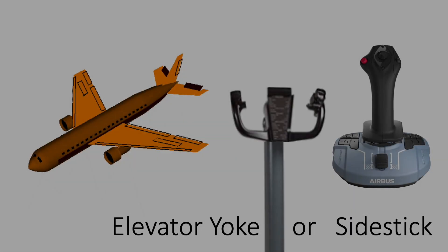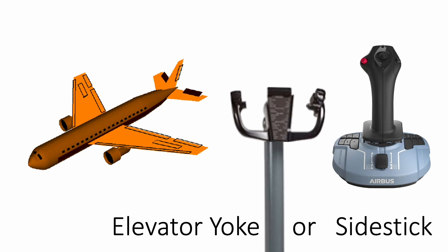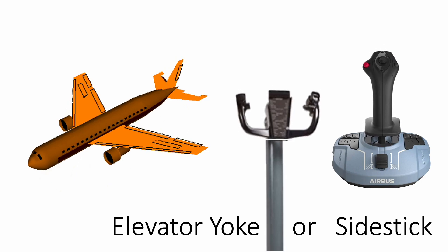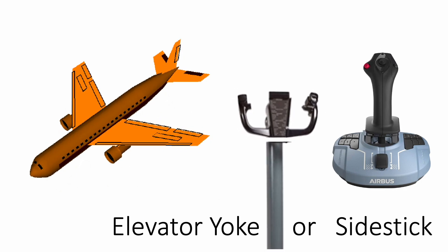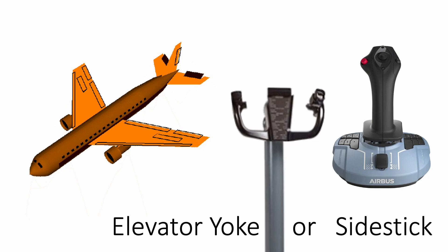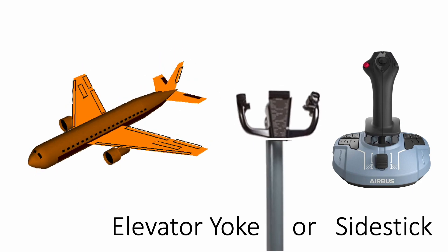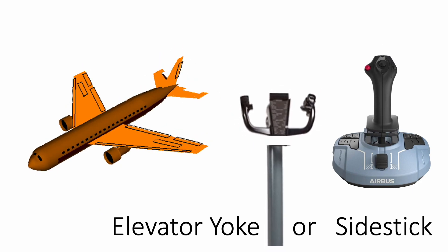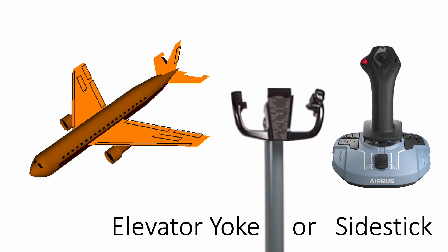We already know that the elevator pitches the airplane up or down, like moving from one floor of a building to another. This is just one of the three primary flight control surfaces.